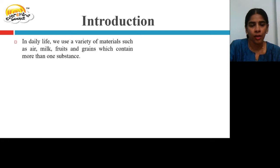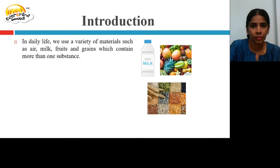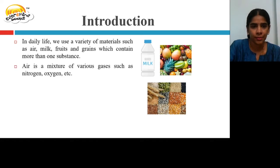In daily life, we use a variety of materials such as air, milk, fruits, and grains which contain more than one substance. Milk, fruits, and grains all contain more than one substance. Air is a mixture of various gases such as nitrogen, oxygen, etc.